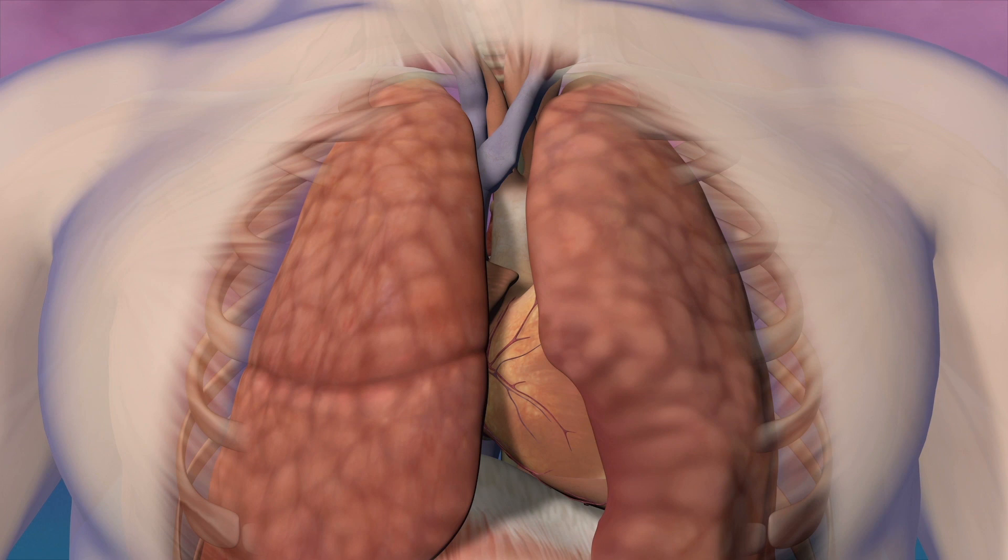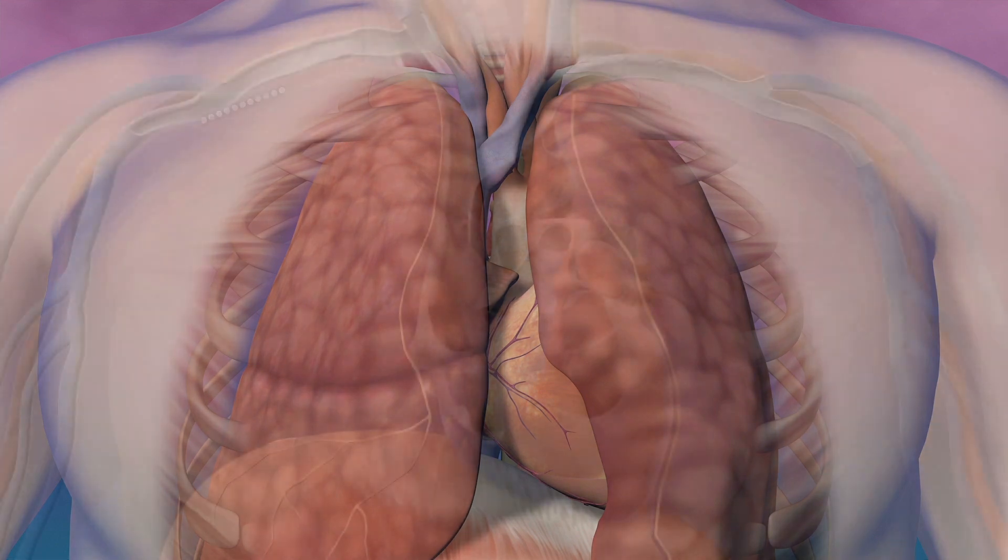The first step of the procedure is placement of a stimulation lead. An incision is made in the pectoral area and used to gain venous access.